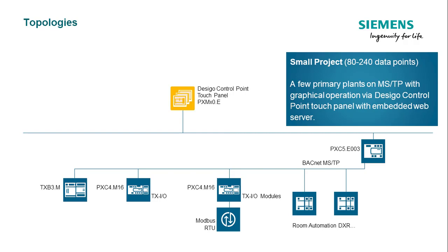If a BACnet MSTP network is preferred, the MSTP variants of the primary automation stations can be used with the system controller PXC5 for the integration. The IOs can be extended using the TXIO modules, and Modbus RTU integration is also supported.